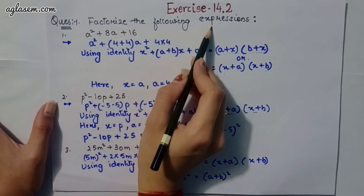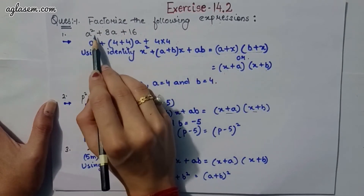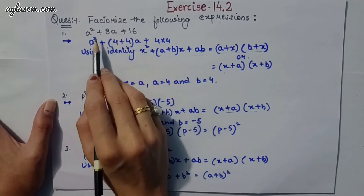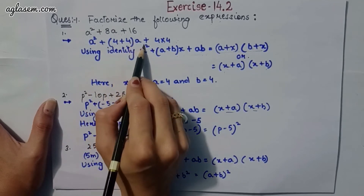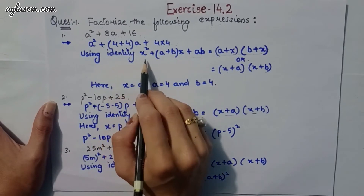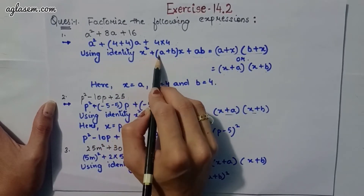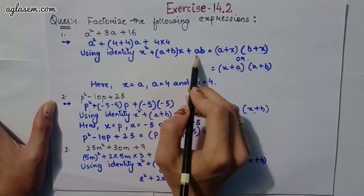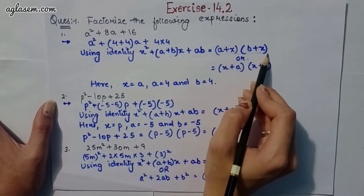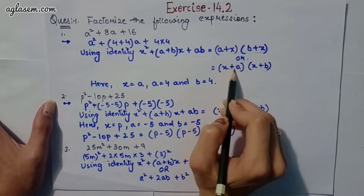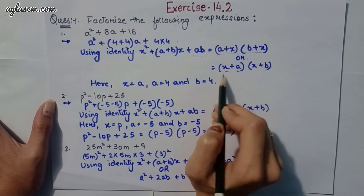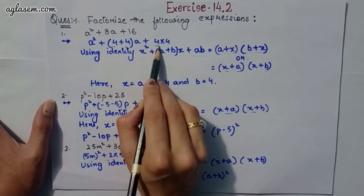The first part says: factorize a² + 8a + 16. The answer is (a + 4)(a + 4). Using the identity x² + (a + b)x + ab = (x + a)(x + b), here x = a, and both a and b equal 4.